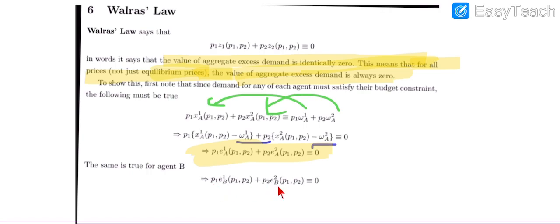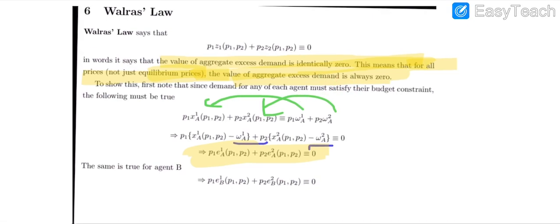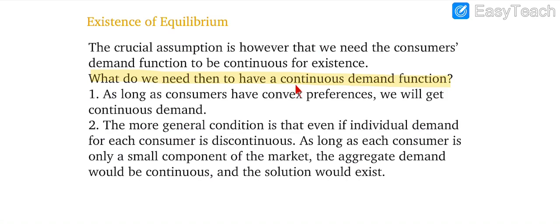For agent B, when both agents' prices and income are equated and set to zero, it shows that excess demand is always equal to zero. So finally, according to Walras, what is required for the existence of equilibrium is that we need to have a continuous demand function. For this, consumers must have convex preferences, which gives us continuous demand.